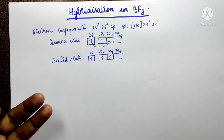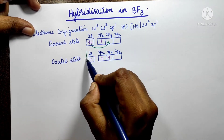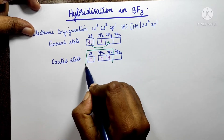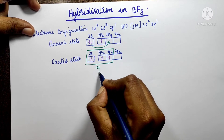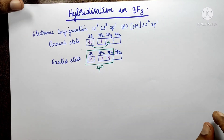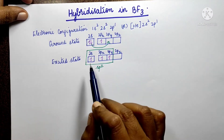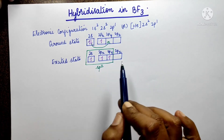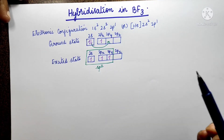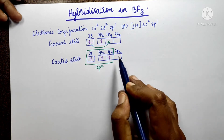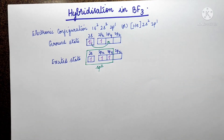So Boron undergoes hybridization. One 2s orbital and two 2p orbitals — 2px and 2py — mix together to form sp² hybridized orbitals. Three atomic orbitals mixing gives three sp² hybridized orbitals. The 2pz orbital does not participate in hybridization and remains as an unhybridized orbital.